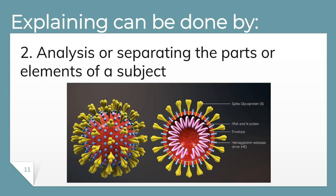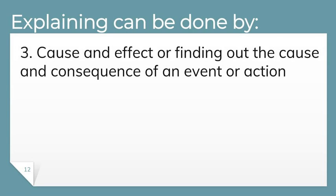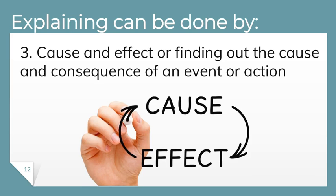Number three is cause and effect — finding out the cause and consequence of an event or action. For example, we can examine the cause of a volcanic eruption and its effect on the people living near it. We can look at what happened when Mount Taal had its volcanic eruption and its effects on parents, students, and teachers. That is how you can explain things through cause and effect.